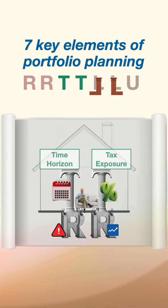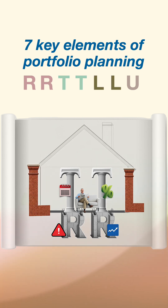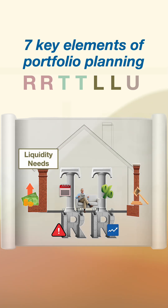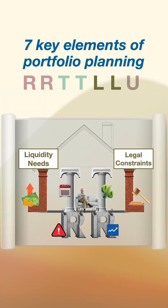Then, build the walls — the two L's. These define the boundaries. Think liquidity needs for quick cash access and any legal constraints they face.